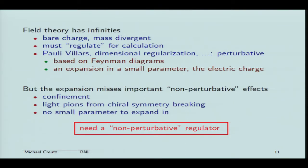Now, a field theory, at least as usually formulated, has some infinities. The bare charge and the mass are both divergent quantities, and you have to regulate them somehow for calculations. But most of the regulators we're familiar with — even dimensional regularization — are perturbative; they're based on Feynman diagrams. You start calculating a diagram, you find an infinity, and you cut it off. Perturbation theory is an expansion in some small parameter, but this expansion misses many important non-perturbative effects, such as confinement. So we really need some kind of non-perturbative regulator for the theory.